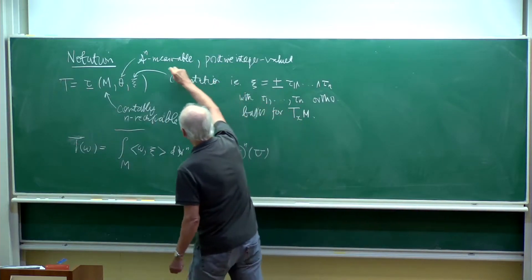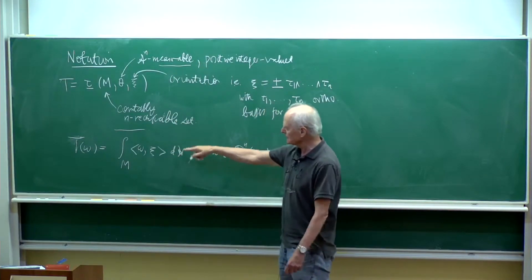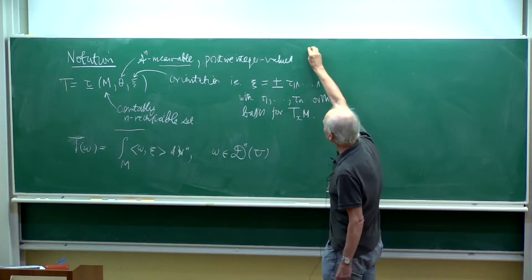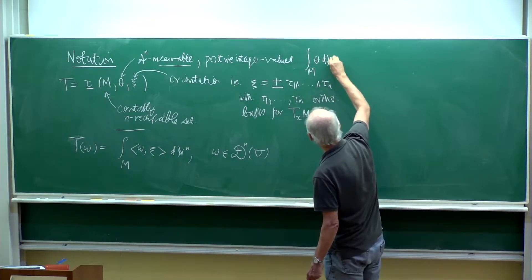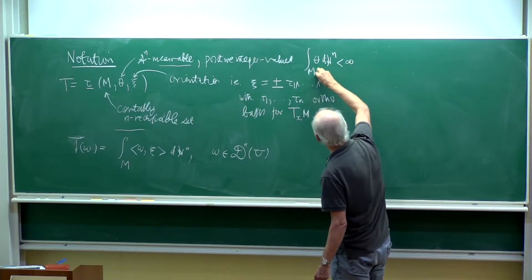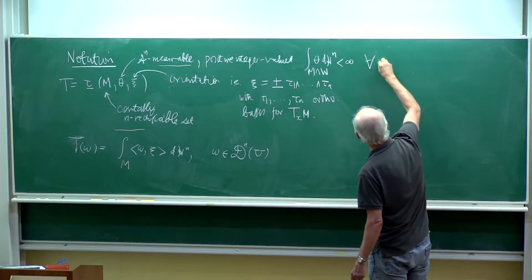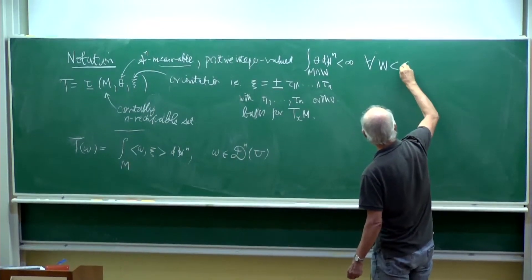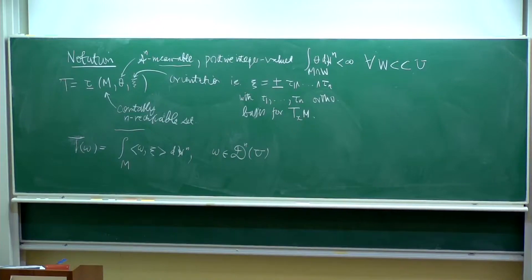Not only does this have to be measurable, but to make sense out of things like this, you need it to be integrable. So you need that the integral of theta over M with respect to H^n, intersected with W, has to be finite for every open W which is compactly contained in U. So that's the notion of integer multiplicity current.